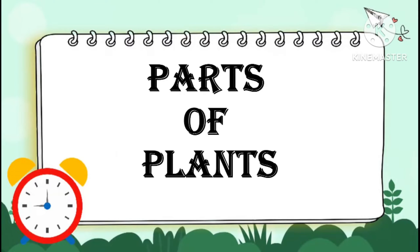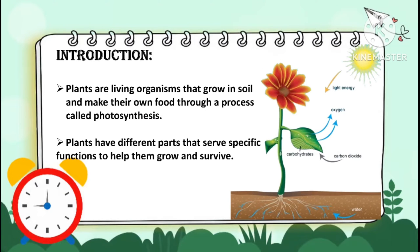Hello viewers, welcome to my channel. Today we are showing a PPT on parts of plants. Plants are living organisms that grow in soil and make their own food through a process called photosynthesis. Plants have different parts that serve specific functions to help them grow and survive.